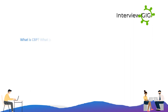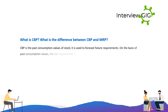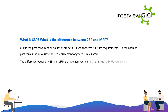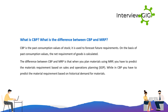What is CBP and what is the difference between CBP and MRP? CBP is based on past consumption values of stock and is used to forecast future requirements. On the basis of past consumption values, the net requirement of goods is calculated. The difference between CBP and MRP is that when you plan materials using MRP, you predict material requirements based on sales and operations planning, whereas in CBP you predict material requirements based on historical demand for materials.